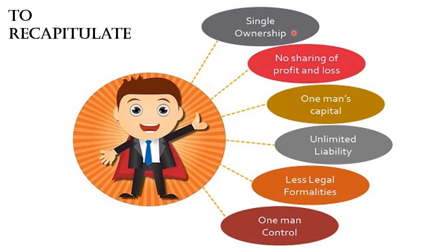Single ownership means this form of business is owned by one individual. There is no sharing of profit and loss — he enjoys all the profits and suffers all the losses by himself only. He invests the capital and starts the business, and he has unlimited liability, meaning if any loss occurs, his personal property can be used to pay off the debts. There are very few or no formalities to start this business, and there is one man control — it is managed by one person, so there is absolute flexibility and absolute control.